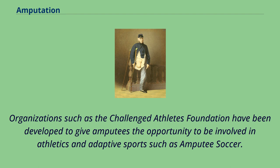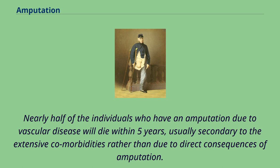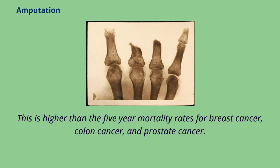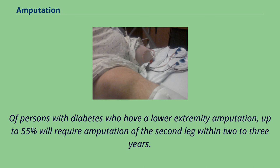Nearly half of the individuals who have an amputation due to vascular disease will die within five years, usually secondary to the extensive comorbidities rather than due to direct consequences of amputation. This is higher than the five-year mortality rates for breast cancer, colon cancer, and prostate cancer. Of persons with diabetes who have a lower extremity amputation, up to 55% will require amputation of the second leg within two to three years.